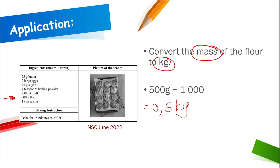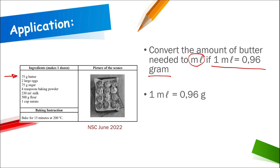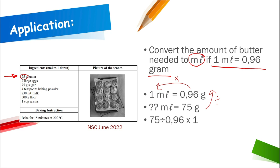Next: convert the amount of butter needed to milliliters, given that 1 ml = 0.96 grams. Butter is 75 grams. Using the conversion factor with the method 'divide up and multiply across': 75 ÷ 0.96 × 1 = 78.125 milliliters of butter needed.